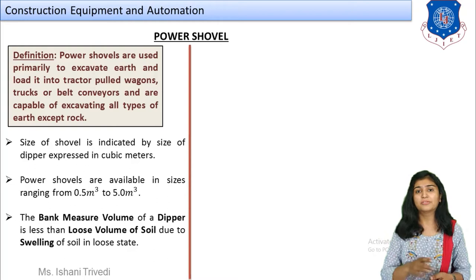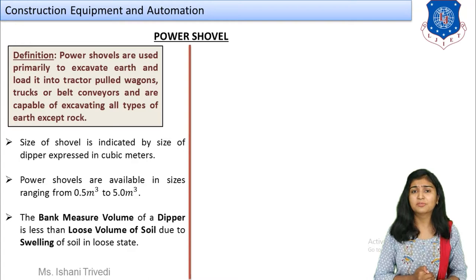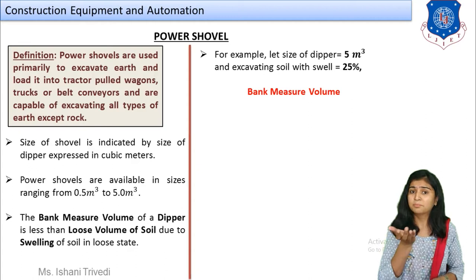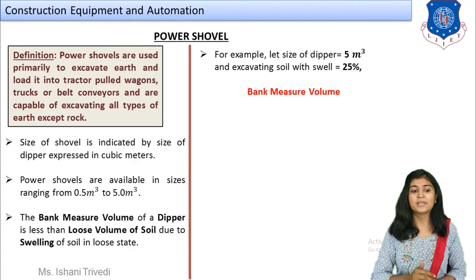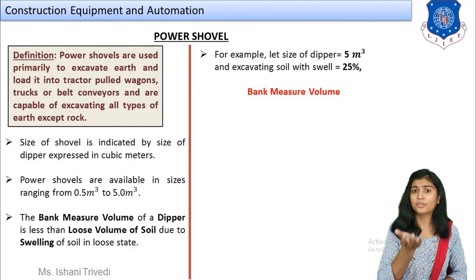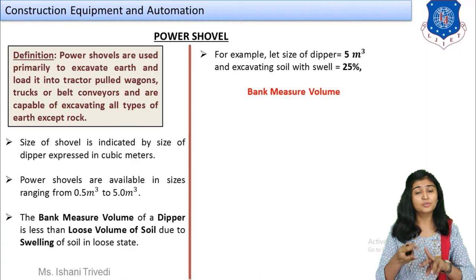The size of the shovel is indicated by the size of the dipper (bucket), expressed in cubic meters. Power shovels are available in sizes from 0.5 m³ to 5 m³ — this is the volume or size of the dipper. Instead of calling it a bucket, in power shovels we call it a dipper.